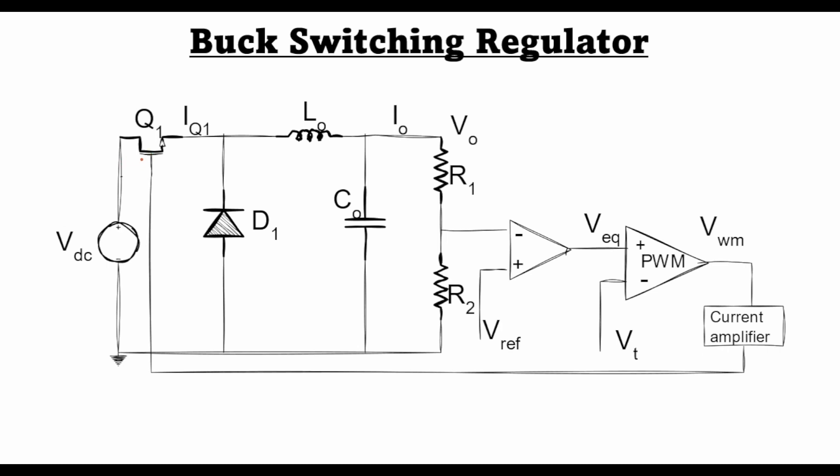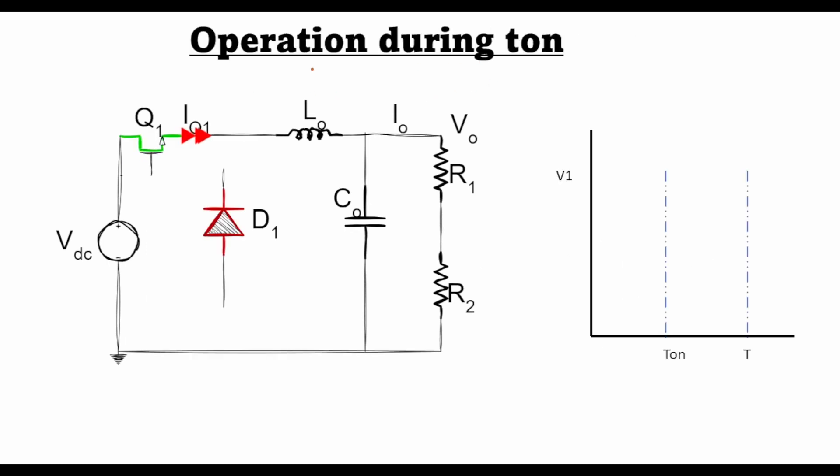So let's look at these two modes of operation in more detail. The first operation we'll look at is during t_on when the transistor behaves like a short circuit. We can assume that the voltage here at this point, let's call it V1, is equal to Vdc because this transistor is turned on, which means that current can flow from the source towards the load.